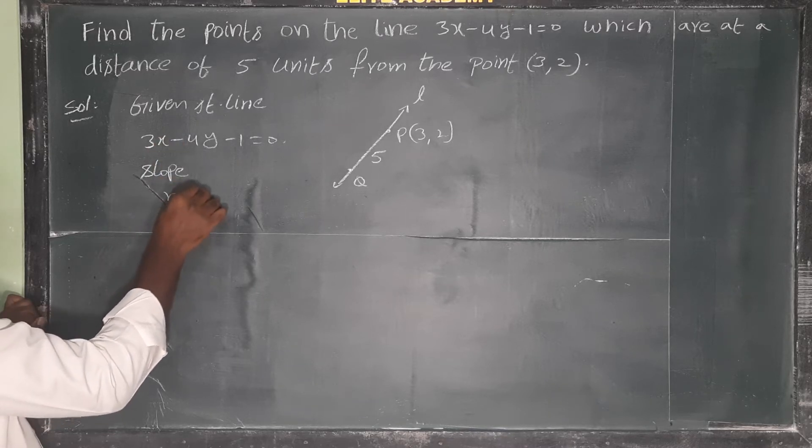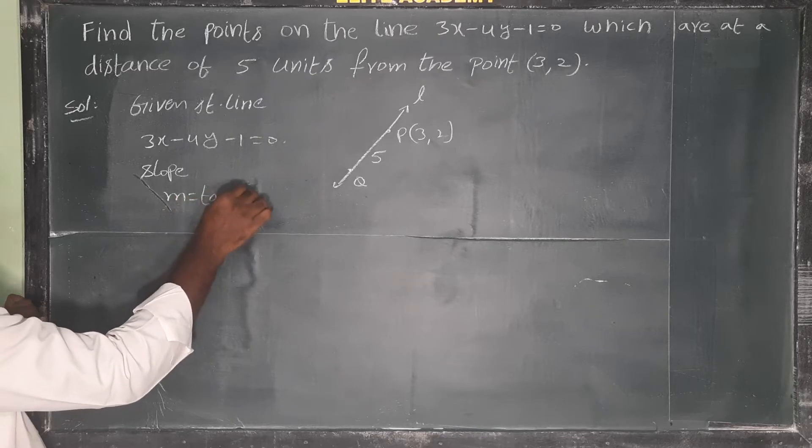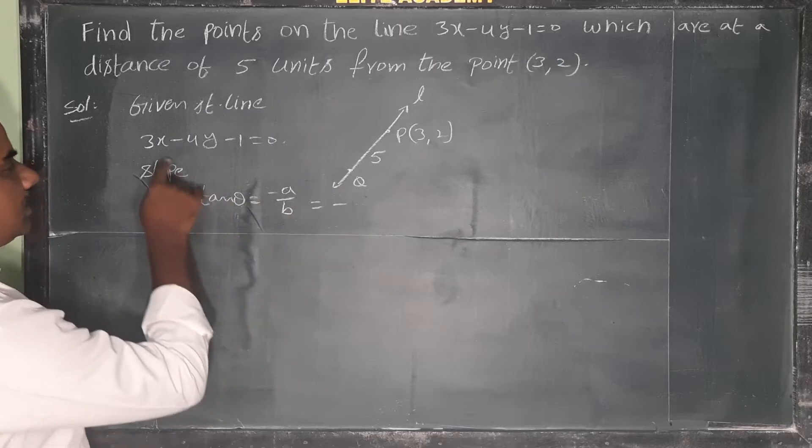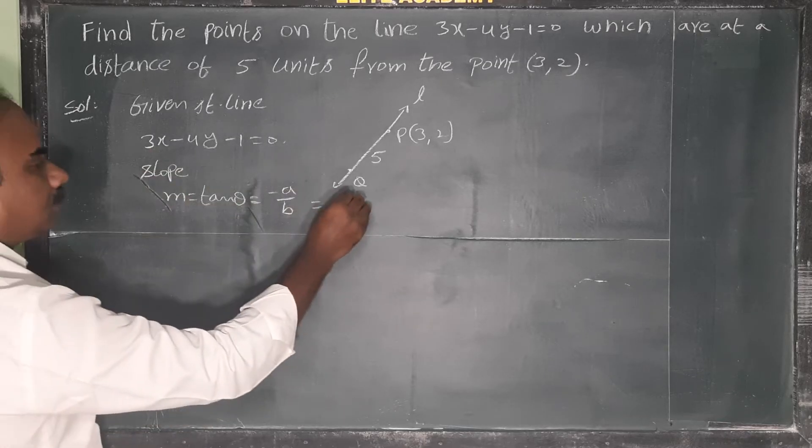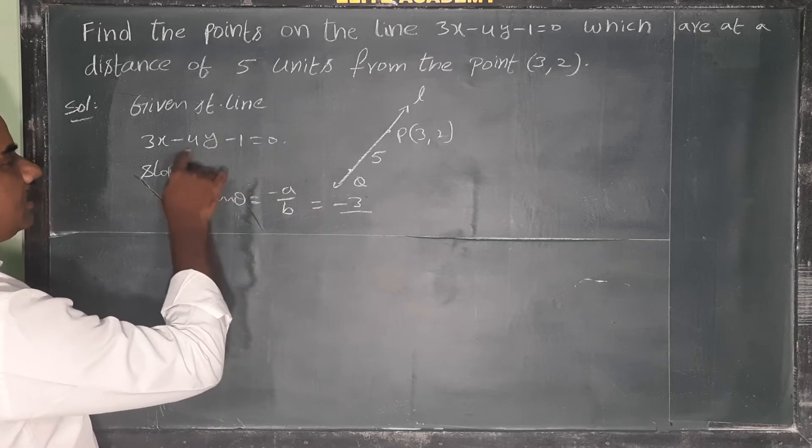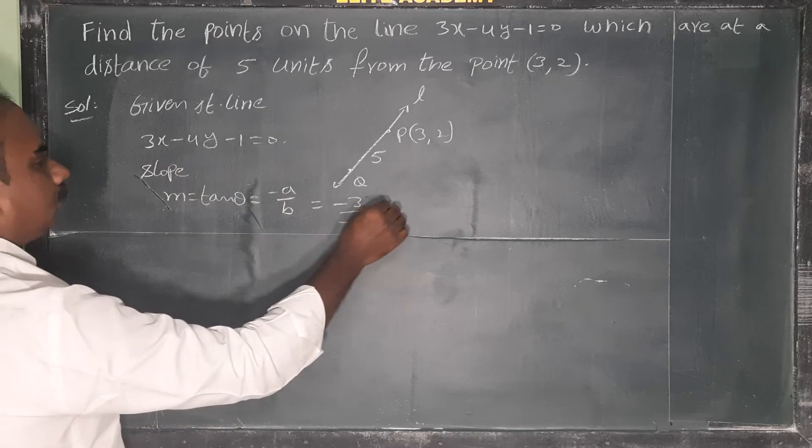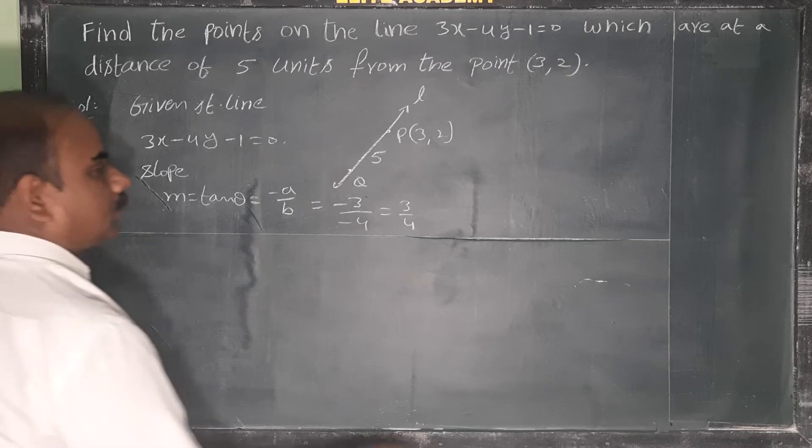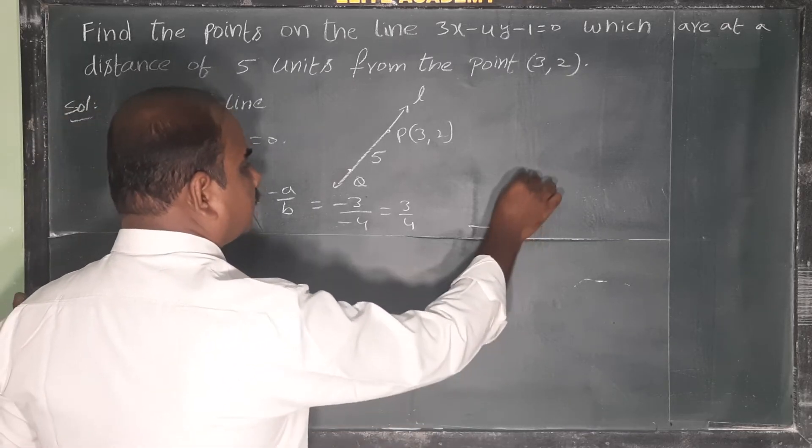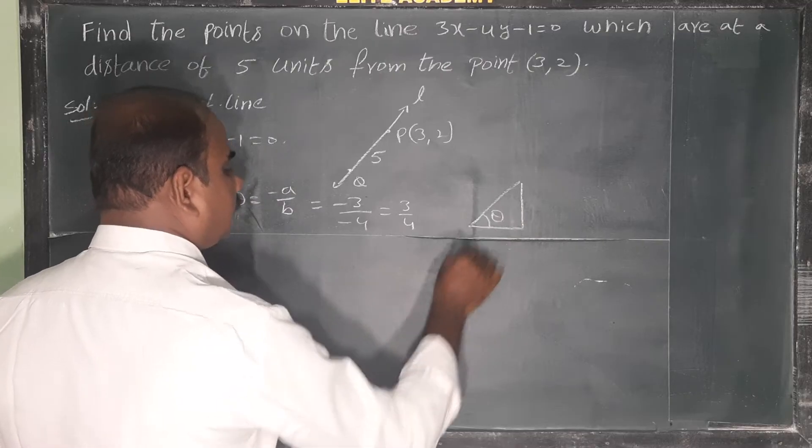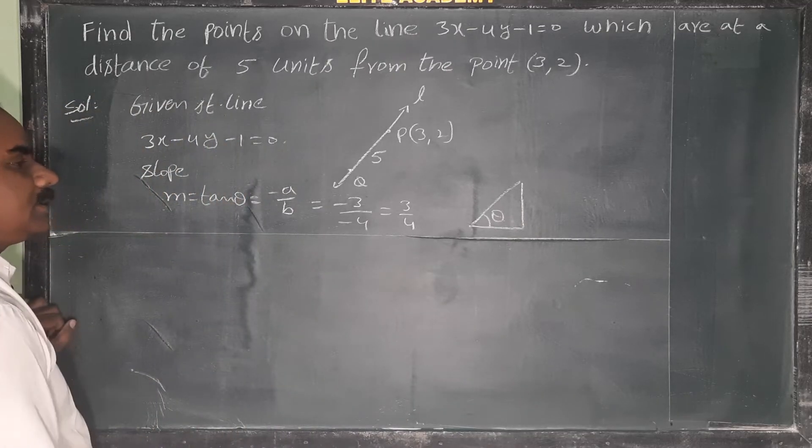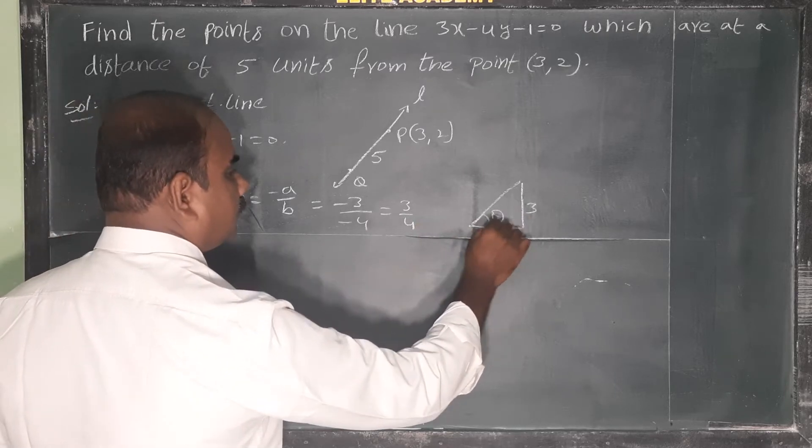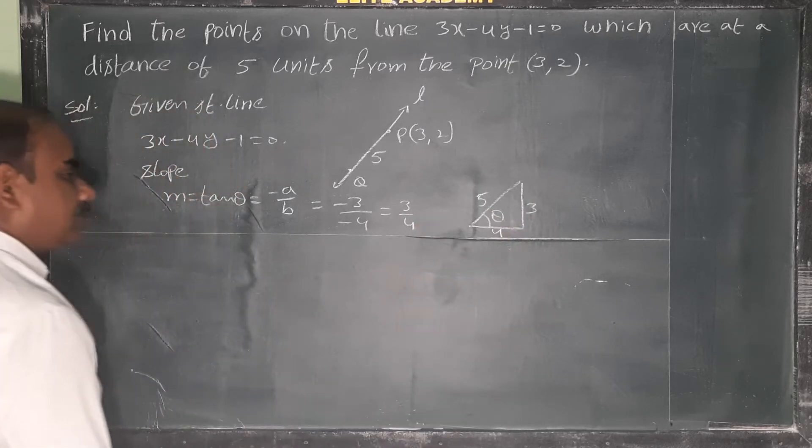m equals tan theta equals minus a by b. Minus a means x coefficient 3, b means y coefficient minus 4. Therefore tan theta equals 3 by 4. So we have a right angle triangle with tan theta, opposite side by adjacent side.